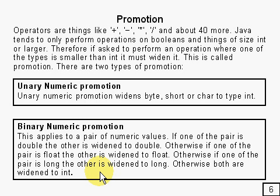So if one of them was a float and the other was a byte, the byte would be widened to a float. And if one of them was a float and the other was a double, then the float would be widened to a double.